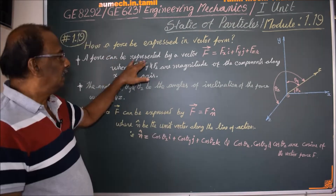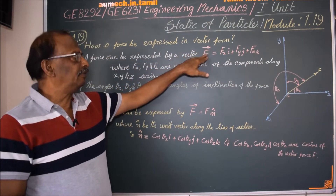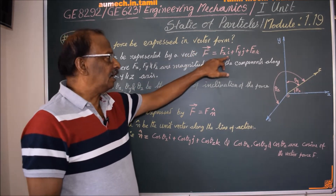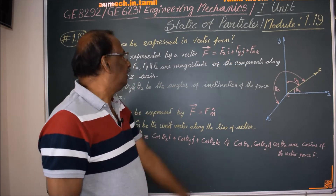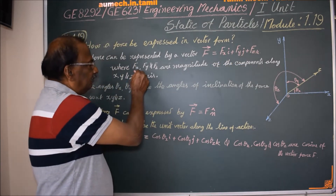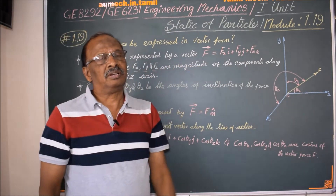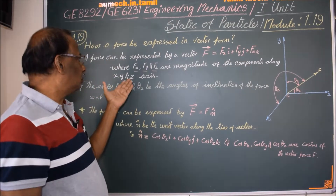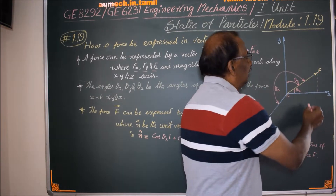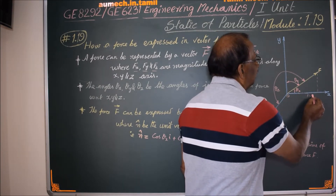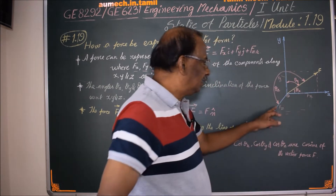The force can be represented by a vector F equal to FxI plus FyJ plus FzK, where Fx, Fy, Fz are the magnitudes of the components along the x, y, z axes respectively. These are the components — this is the resolution. This is Fx, this is Fy, this is Fz.